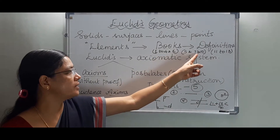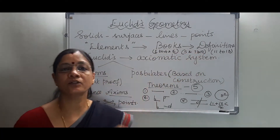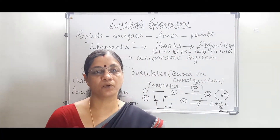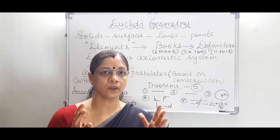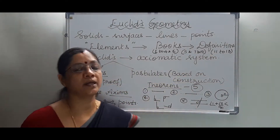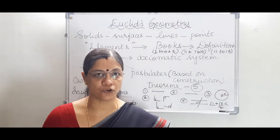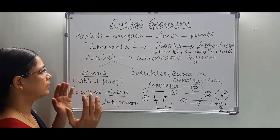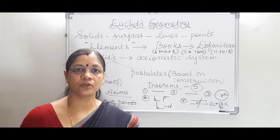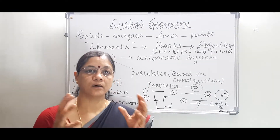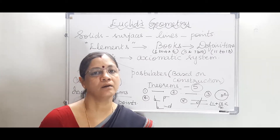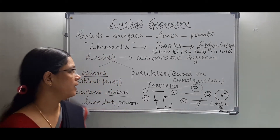Books 5 and 7 to 10 are based on number theory, and books 11 to 13 are full of solid geometry. So according to our chapter, we are going to see Euclid's theorems and axioms regarding plane geometry.